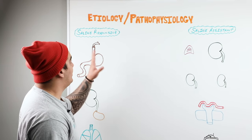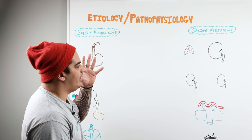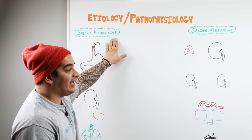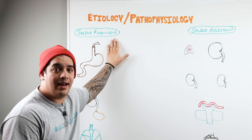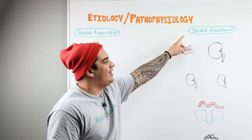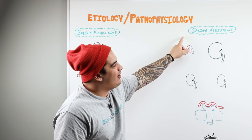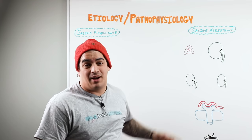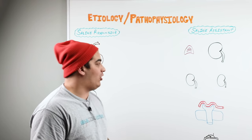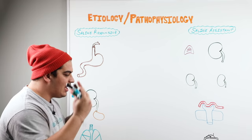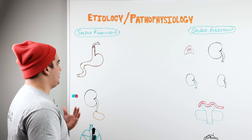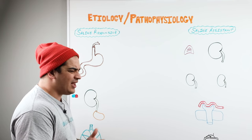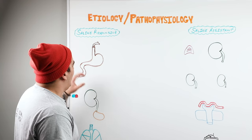The easy way I like to remember the etiologies is to ask: is the person volume down, and if I give them some fluid will they respond and improve? Or are they normal or volume up, and giving them fluid won't really make a difference? That's how I separate the etiologies — saline responsive versus saline resistant.